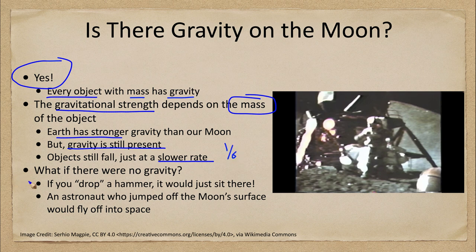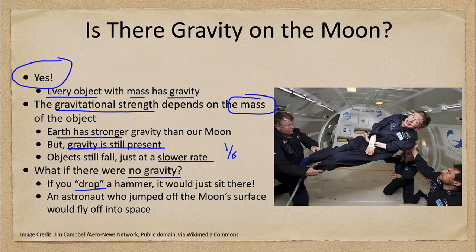Now, what's the difference? What would have happened if there were no gravity on the Moon? Well, the astronaut dropping objects such as the hammer — it would just hang there in space. There would be nothing pulling it down and it would just hang in space. For example, we can show a picture here. Here is the physicist Stephen Hawking in a zero gravity environment, which is something we can also simulate here on Earth.